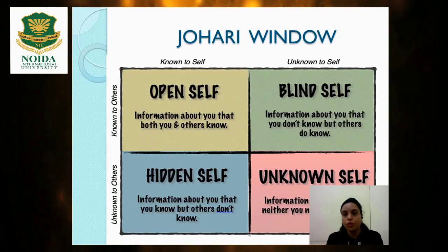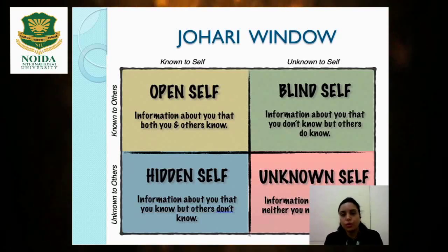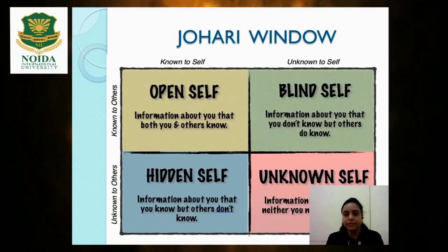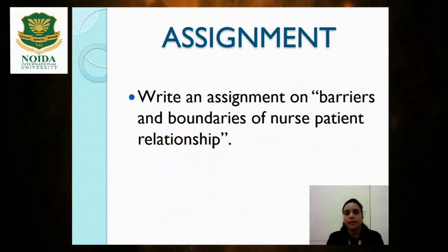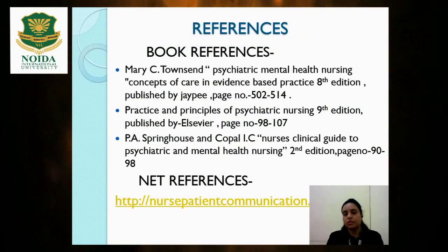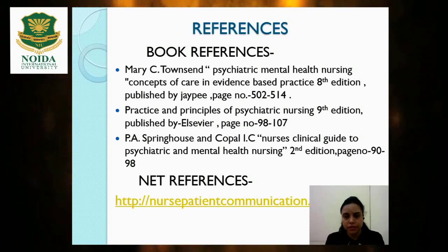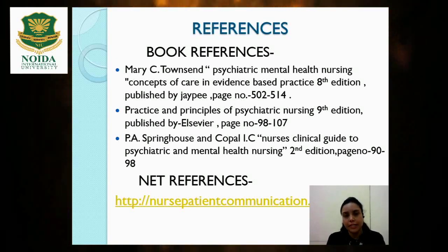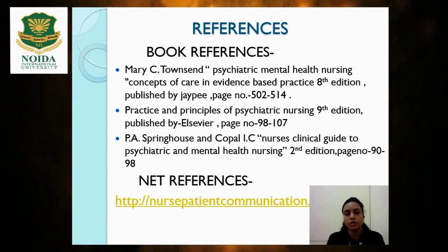So there are four quadrants in the Johari Window — open self, blind self, hidden self, and unknown self. The Johari Window was introduced as a four-quadrant model. That's it for nurse-patient relationship. You can refer to the components and phases of nurse-patient relationship from the listed references of books and internet sources.